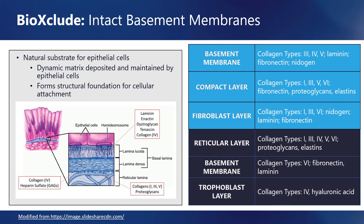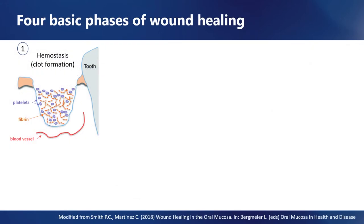This idea becomes extremely important when considering the biological advantage of de-epithelialized amnion-chorion membranes like BioExclude. Epithelial cells like those of the gingiva are uniquely tuned to identify the extracellular matrix proteins of basement membranes as a way of orienting themselves within the body. This becomes particularly important in wound healing environments where basement membranes are often damaged or missing altogether. To understand why amnion-chorion membranes are uniquely suited for periodontal procedures, it's useful to review the four basic phases of wound healing.